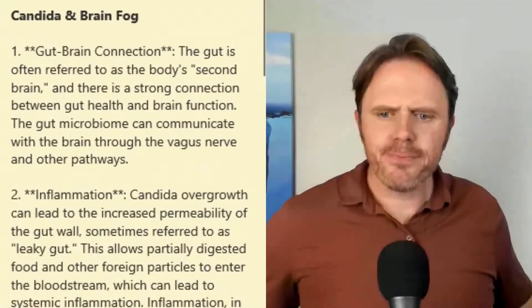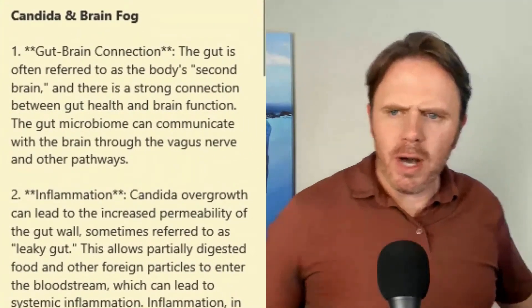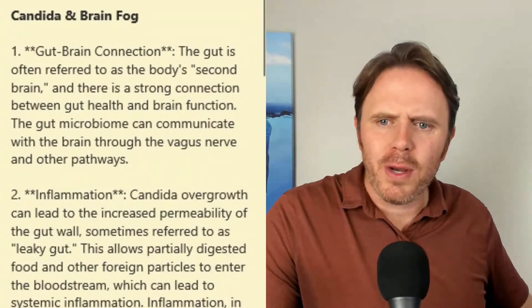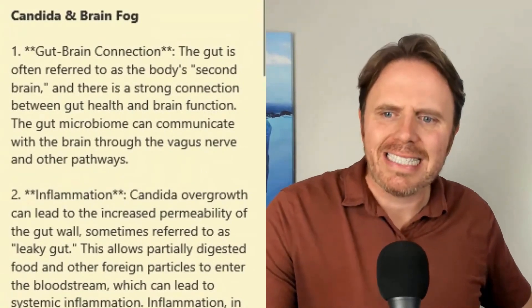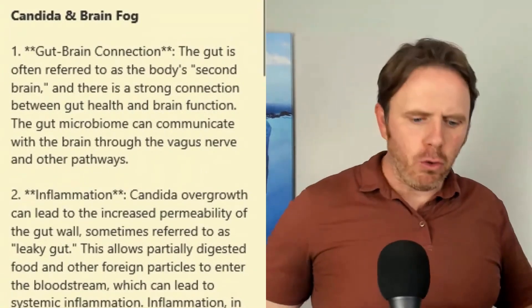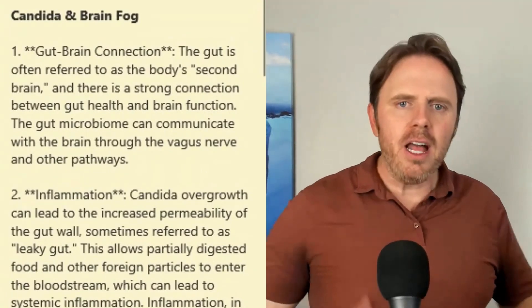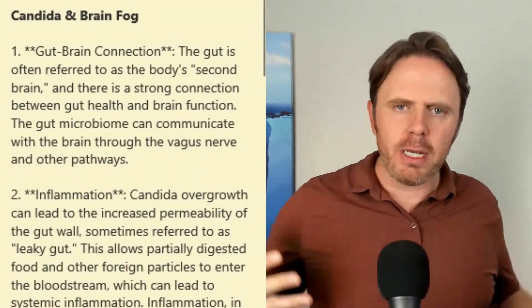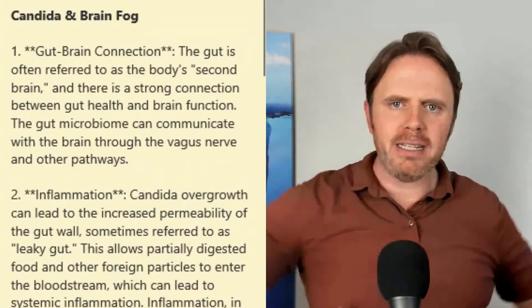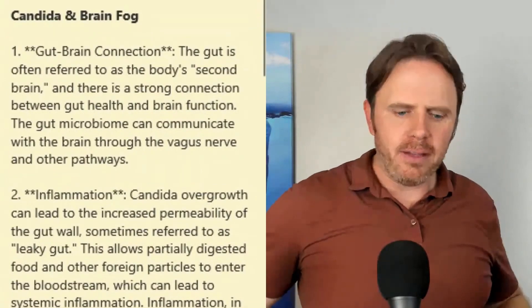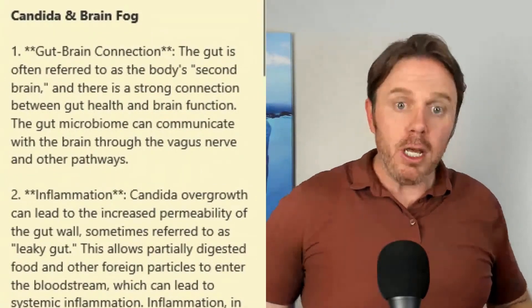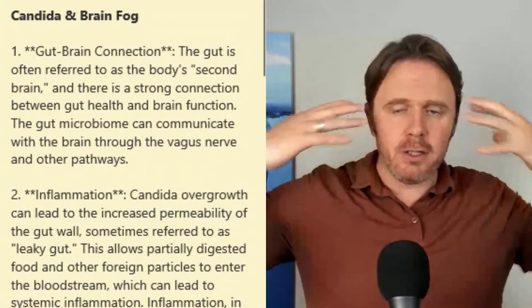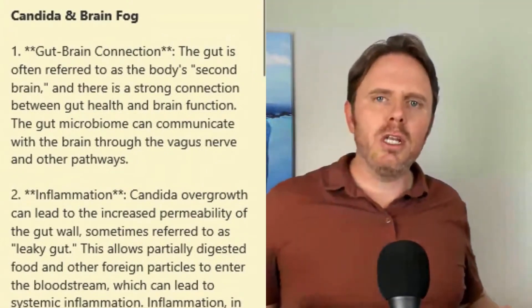Let's dive in. So out of the gates, the gut-brain connection — the gut is often referred to as the body's second brain. The microbes in the gut communicate through what's called a bidirectional two-lane highway: inflammation in the brain can travel to the gut, and gut inflammation can make its way to the brain. So there's bidirectional communication.